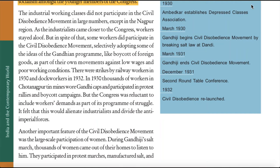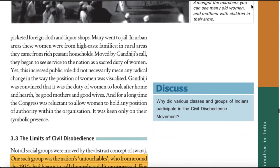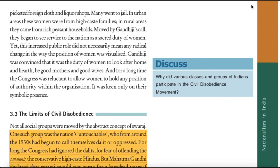Another important feature of the civil disobedience movement was large-scale participation of women. During Gandhiji's salt march, thousands of women came out of their homes to listen to him. They participated in protest marches, manufactured salt and picketed foreign cloth and liquor shops. Many went to jail. In urban areas these women were from high-caste families; in rural areas they came from rich peasant households. Moved by Gandhiji's call, they began to see service to the nation as a sacred duty of women. Yet this increased public role did not mean any radical change in the position of women — Gandhiji was convinced it was the duty of women to look after home and hearth, and for a long time the Congress was reluctant to allow women to hold any position of authority within the organization.